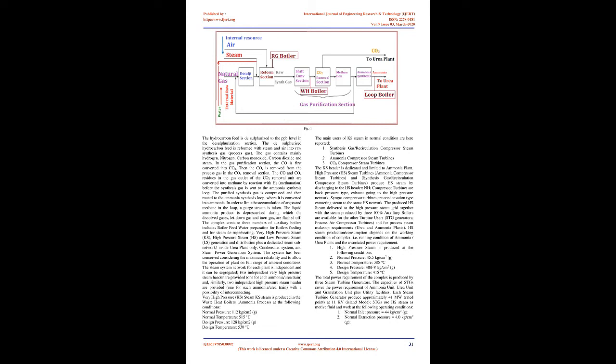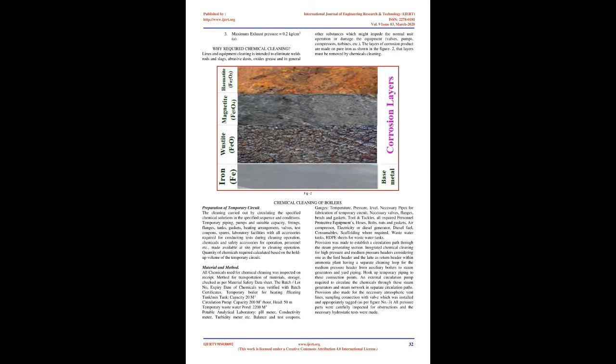High pressure (HS) steam network operates at 46 kg/cm² and 385°C. This runs from the auxiliary boilers up to three nos steam turbine generators and also in ammonia plant.